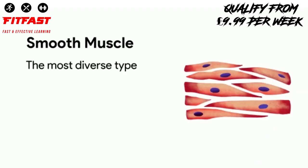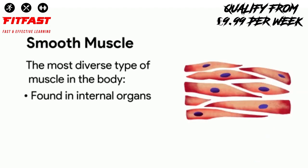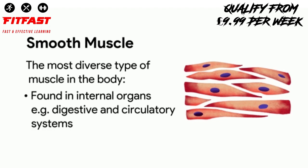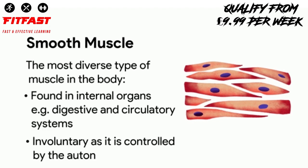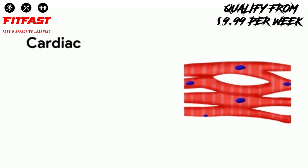Smooth muscle is the most diverse type of muscle in the body. Found in internal organs, e.g. the digestive and circulatory systems. Involuntary, as it is controlled by the autonomous nervous system.